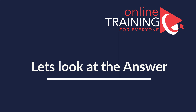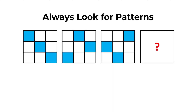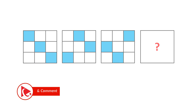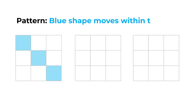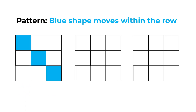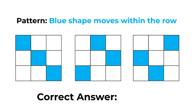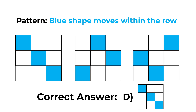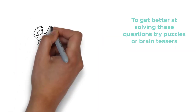Always look for patterns — determining the pattern is key to solving this problem. The blue shape moves within the row of the larger shape. In each row, the blue shape moves from left to right one step at a time, and once it reaches the end of the row on the right, it reappears on the left. So the correct answer here is choice D.